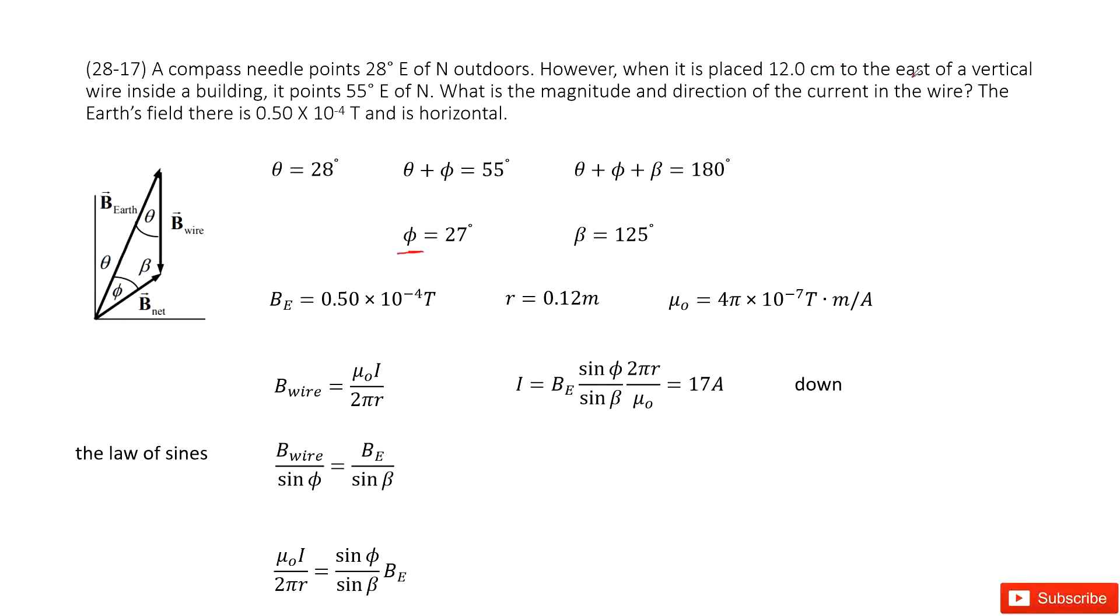This is east of a vertical wire inside a building. For a vertical wire, the magnetic field B points down. This angle is also theta. In this triangle, theta plus phi plus beta equals 180°, so you can get beta as 125°.